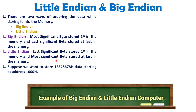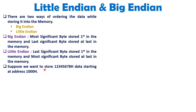Let me give you one example for clarity. For example, we want to store the data 12345678 hex, starting from address 1000 hex. First, you need to understand this data and split it into bytes. The most significant byte is 12 hex. Then the 2nd byte is 34 hex. Then 56 hex is the 3rd byte. And the last byte, the 4th byte, is 78 hex.